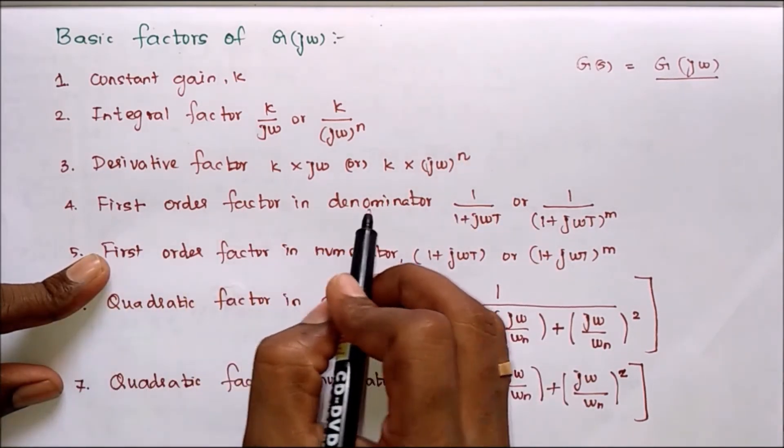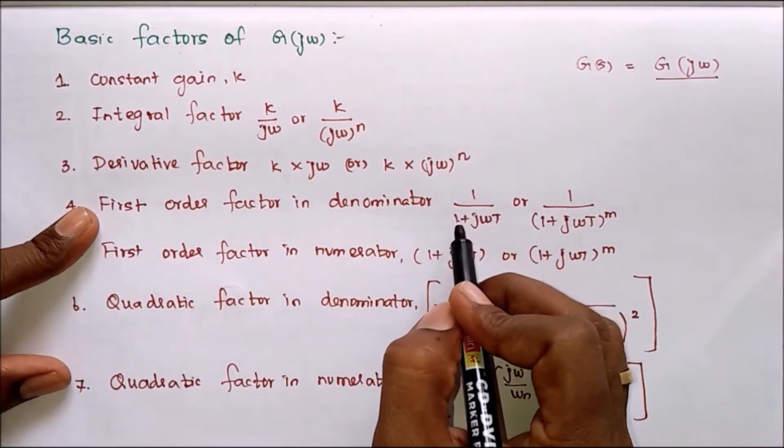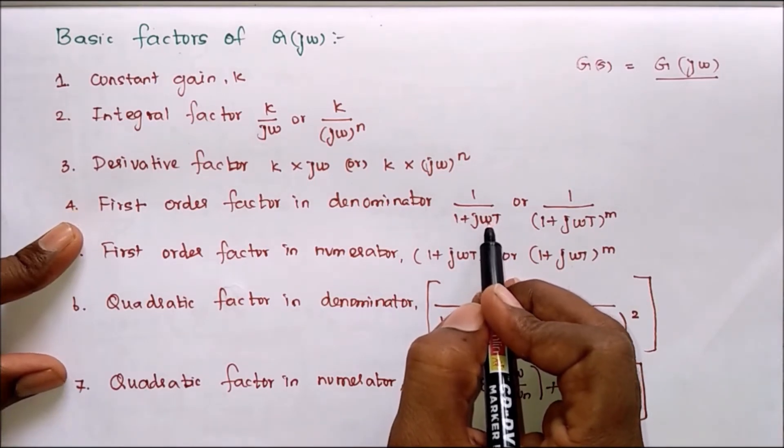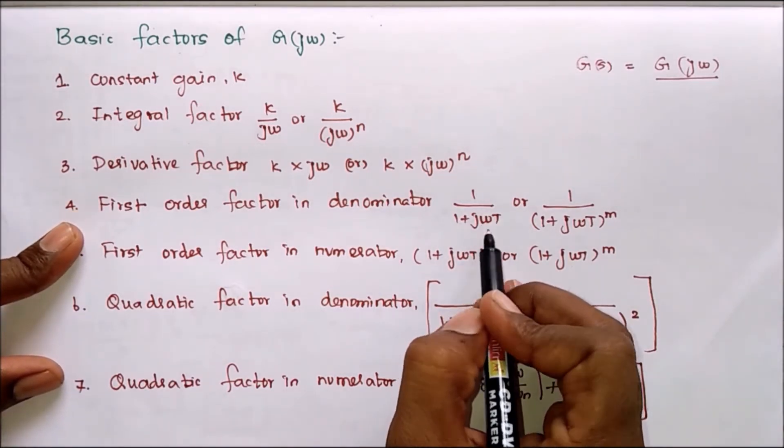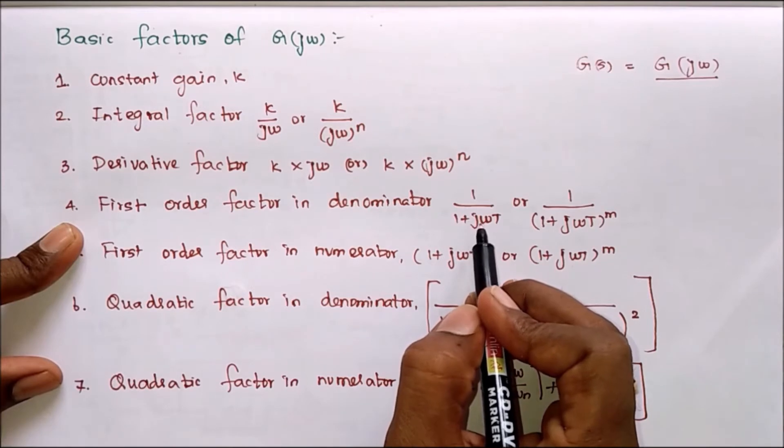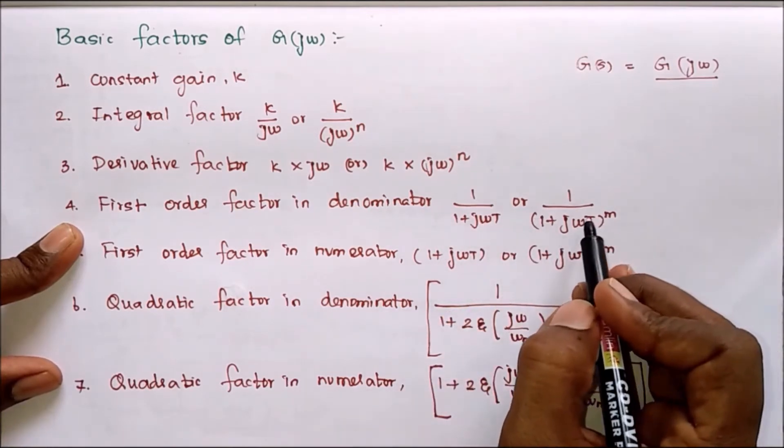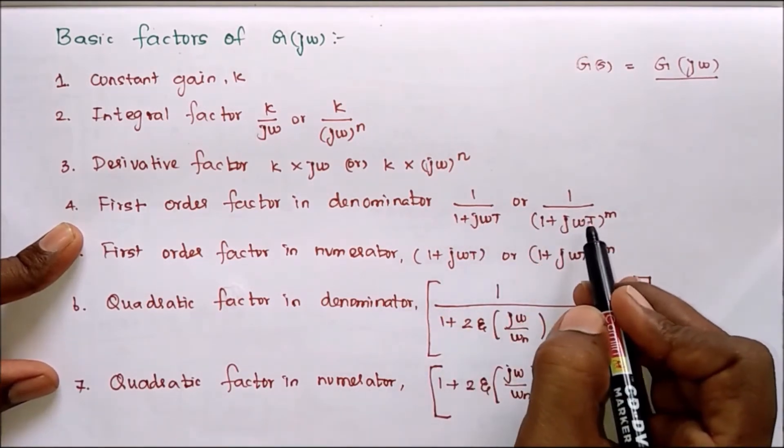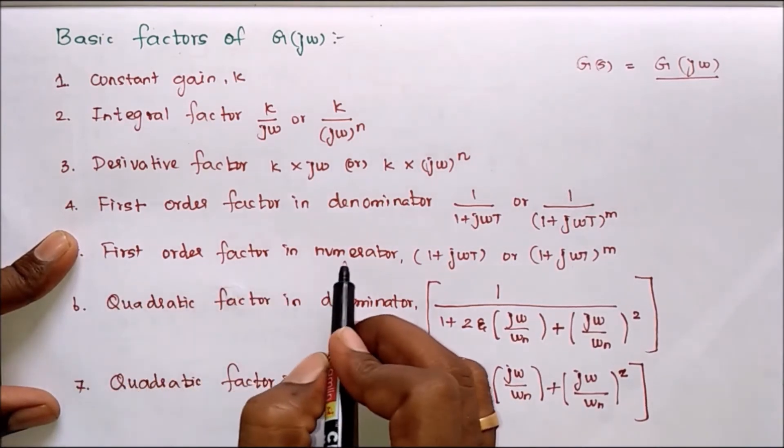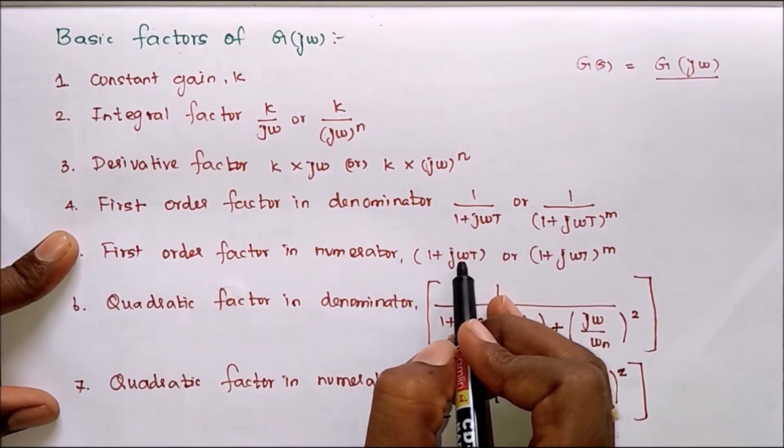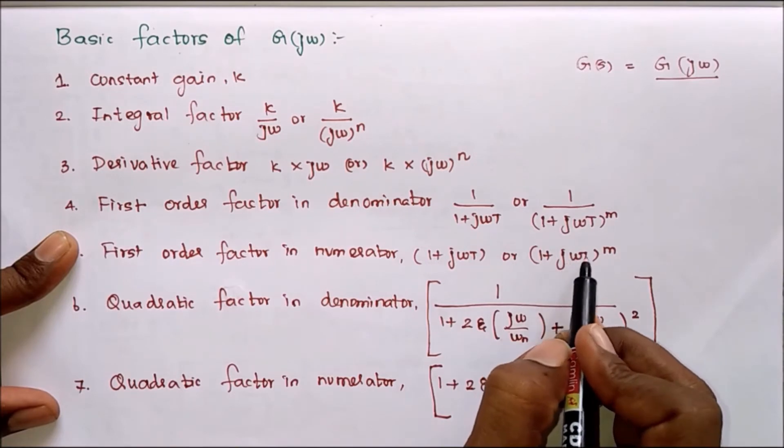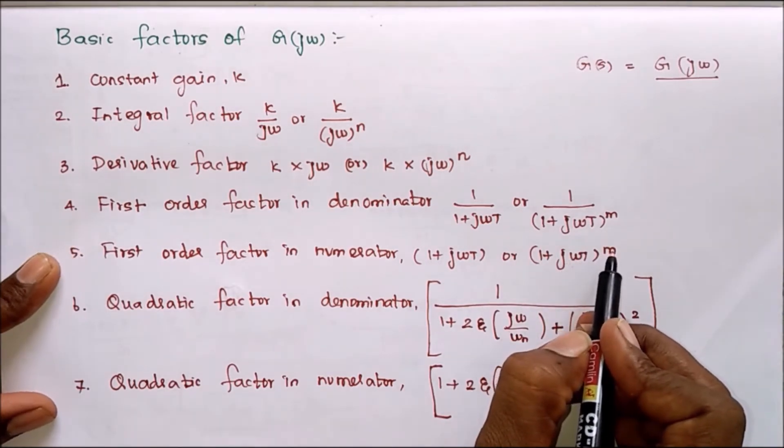Similarly first order factor in denominator: 1 divided by (1 plus jωt). This is first order factor in denominator. Suppose if it is mth order means it may be first order or mth order. Next first order factor in numerator. The same structure will be in numerator, the order is mth order.